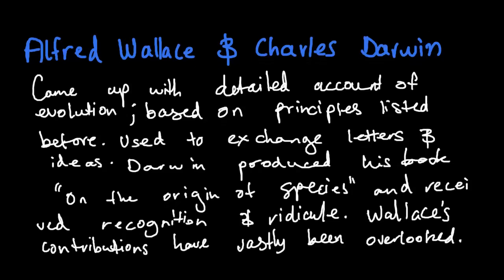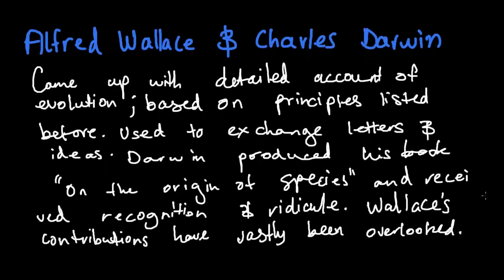Alfred Wallace and Charles Darwin came up with a detailed account of evolution based on the principles listed before. They used to exchange letters and ideas, which helped both of them in their research. Darwin's work was highly acclaimed and widely recognized, but also ridiculed at the same time. Darwin produced a book called 'On the Origin of Species,' which explained evolution in the most detailed account he could produce, including his observations of the Galapagos Islands.